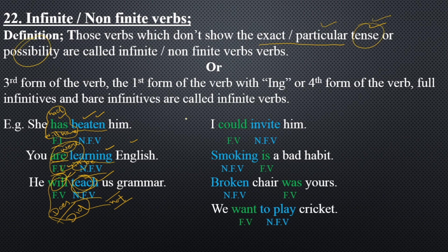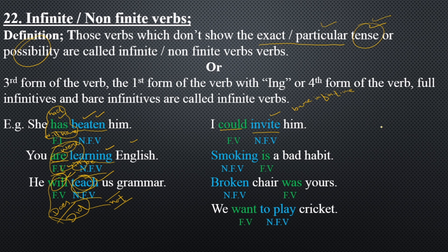Now let's discuss the possibility of an action. When any verb does not tell you the possibility of an action, it is also called a non-finite or infinite verb. In 'I [will] invite him,' 'invite' is a bare infinitive — the first form of the verb used as a bare infinitive. For example: 'I must invite him' means the action is 100% possible and necessary. 'I ought to learn English' is 85%, and 'I should learn English' is 75%.